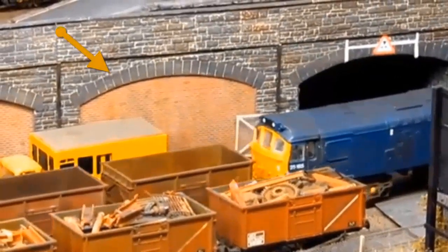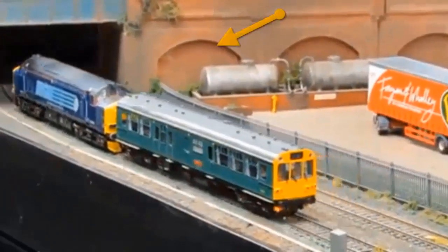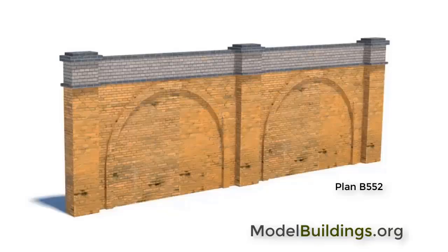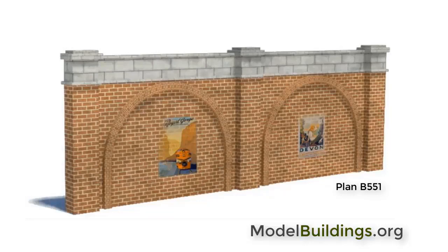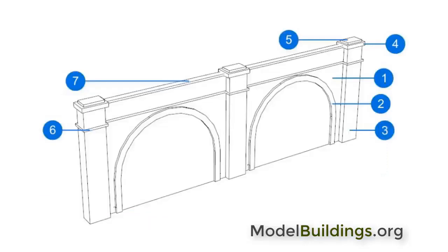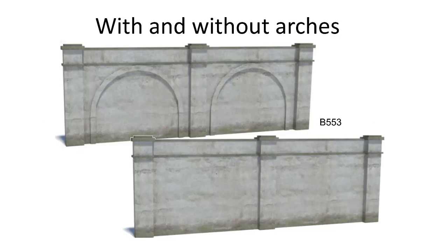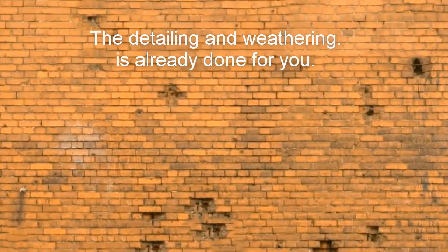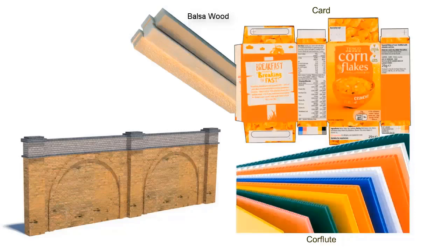These downloadable designs include a lot of fine detailing. The clever thing is you download the plans just once, and you can print out as many duplicates as you might need for your brick wall to stretch the distance you want. Save the designs on your computer and you can make more walls later. Better still, you won't need to buy model paints or spend hours adding details, airbrushing, and weathering — it's already done for you. And you'll find these designs fun to assemble using whatever materials you want.